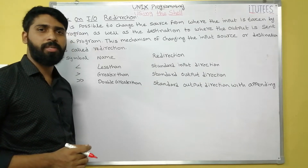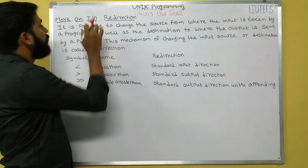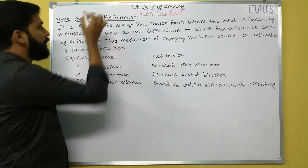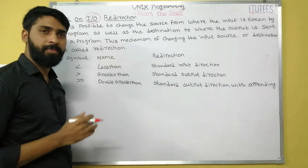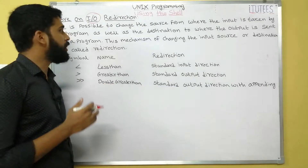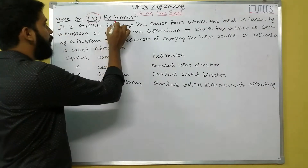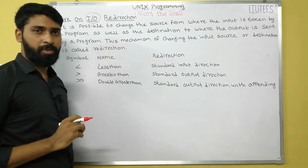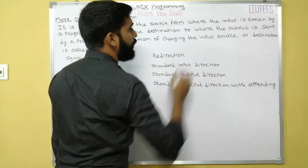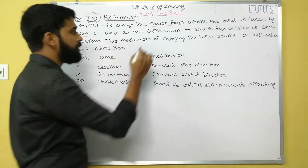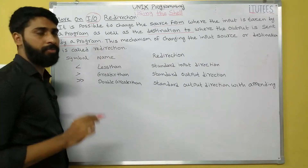Welcome to Unix programming tutorials. In this class we are going to discuss I/O redirection. I/O means input and output redirection. Input means whatever you are reading from the keyboard, and whatever you are going to print on the console is known as output. So the default input is keyboard and the default output is monitor.